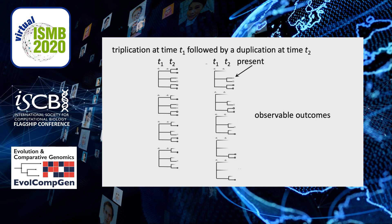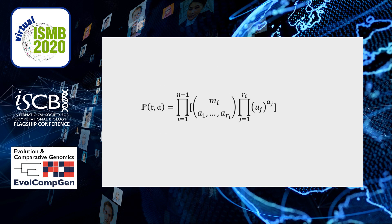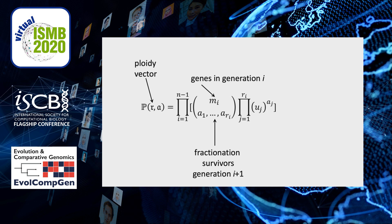This is summarized in the probability measure P, where R is the ploidy vector — 2, 3, 4, whatever. MI is the number of genes in generation I. Each of these genes gives rise to R copies, and A counts the number of genes for each generation of these copies that survive. U is the retention rate, or the multinomial probabilities.